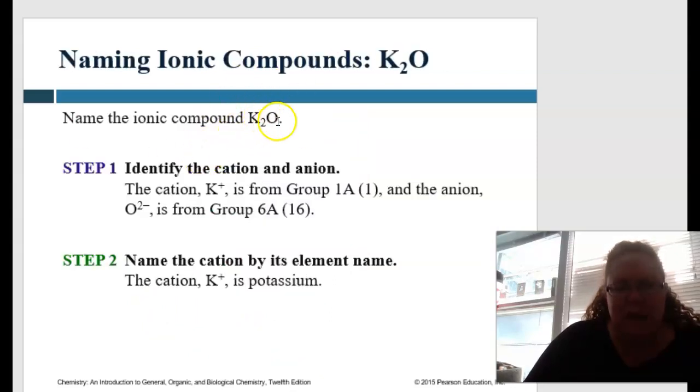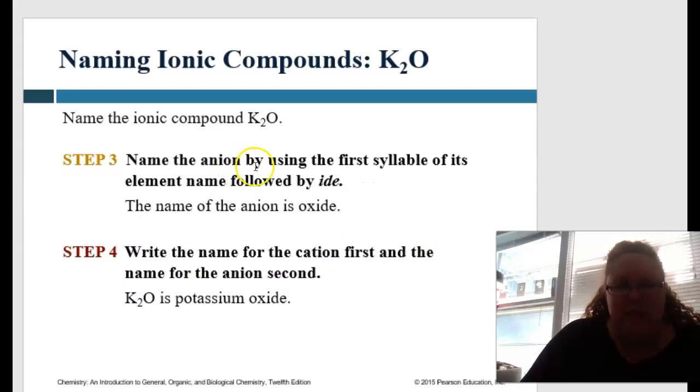So let's name this compound. So the cation potassium is from group 1A, and the anion oxygen is from group 6A. Okay, so we're going to be naming the cation by its elemental name. And the cation, K+, is potassium. And then we're going to name the anion by using the first syllable of its elemental name, followed by -ide. So oxygen, ox, -ide. Okay, so then K2O would be potassium oxide.